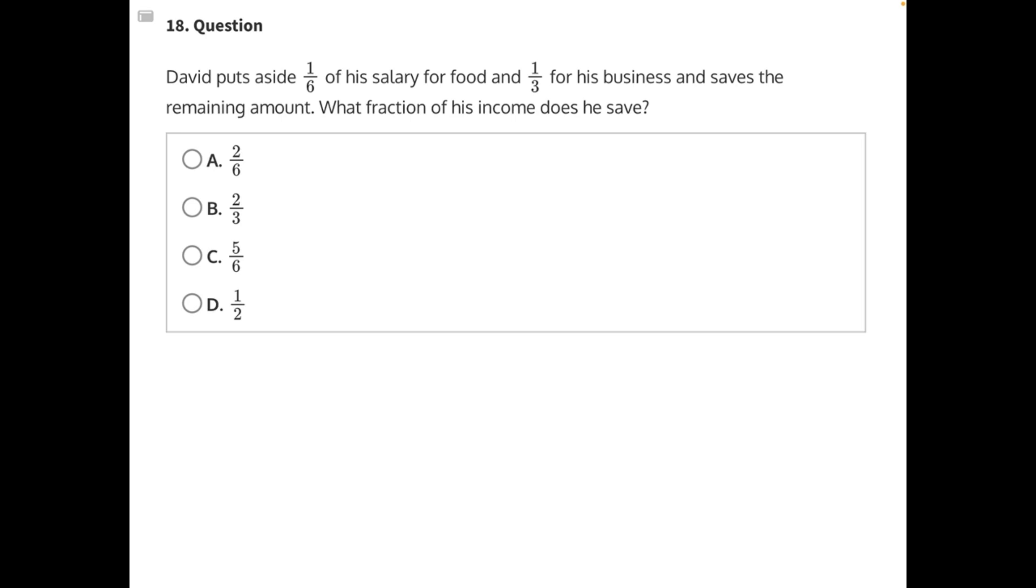Well, let's start by figuring out how much money he puts aside for food and for his business. To do that, we need to add these two fractions together, and to do that, we need to have a common denominator.